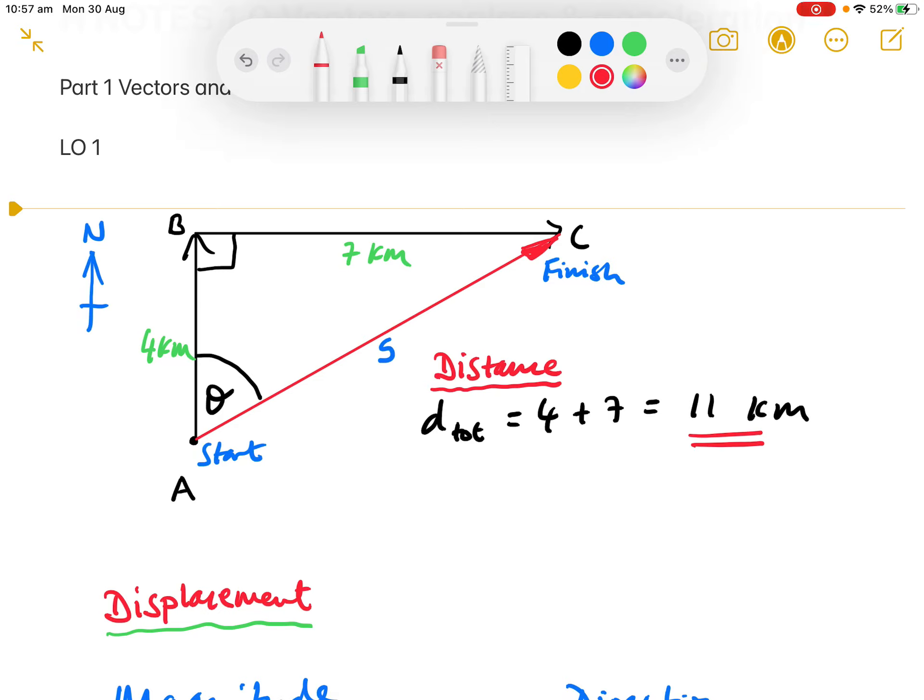Displacement is the vector sum of the two displacement vectors, 4 kilometers north and 7 kilometers east. We add these tip to tail, as the diagram shows, and the red vector is the resultant displacement.